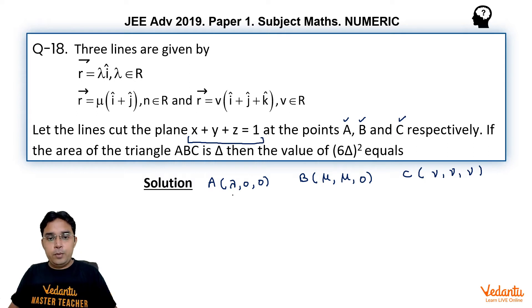So if I put this value of A in this equation, we get lambda equal to 1, we get mu equal to half and nu equal to 1 upon 3. Very simple to see. So we can say your A point would be 1 comma 0 comma 0, your B point would be half comma half comma 0, and C point would be 1 by 3 comma 1 by 3 comma 1 by 3.